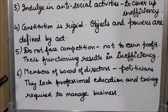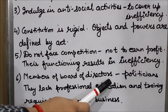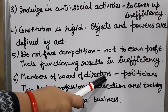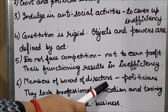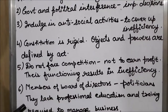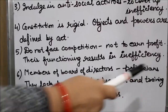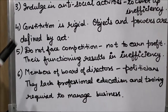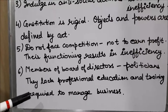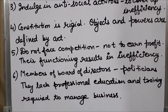The last demerit of statutory corporation is that members of the board of directors are appointed by the government, and mostly these are politicians. Politicians lack the professional education and training which is necessary for managing a business. So these are the demerits of statutory corporations.